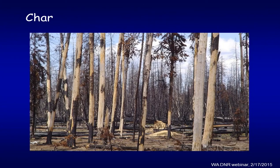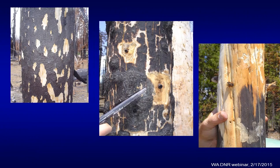People always mention char because if they go into a firekill stand, they usually end up with black all over their hands or clothes. But generally char doesn't appear too far into the tree. If you have a really thin bark species or young trees with thin bark, you'll get some charred wood. On smaller trees, small branch stubs might burn into the bole, and you'll get a little charring on the external part. For the most part, char isn't that big of an issue. However, if you want to make clean chips or a pulp chip out of it, char could definitely be a deal breaker.